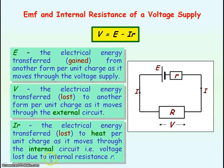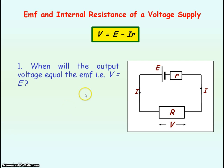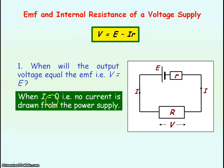I times little r represents the electrical energy lost per unit charge as the charge moves through the internal circuit of the cell — the voltage loss due to internal resistance. Because of resistance, electrical energy is transferred into heat energy. Our output voltage will equal the EMF either when the internal resistance r is negligible and can be ignored, or when the current I is zero.